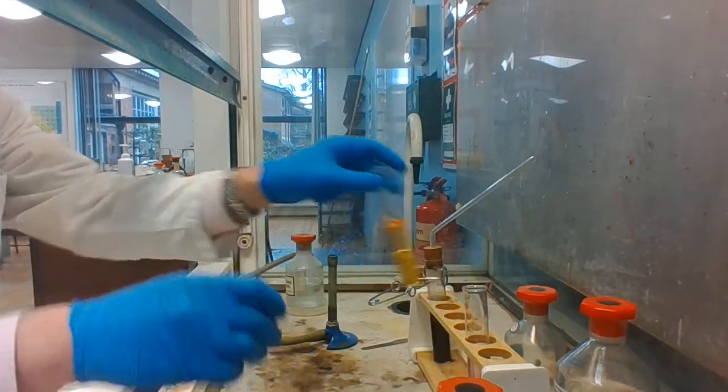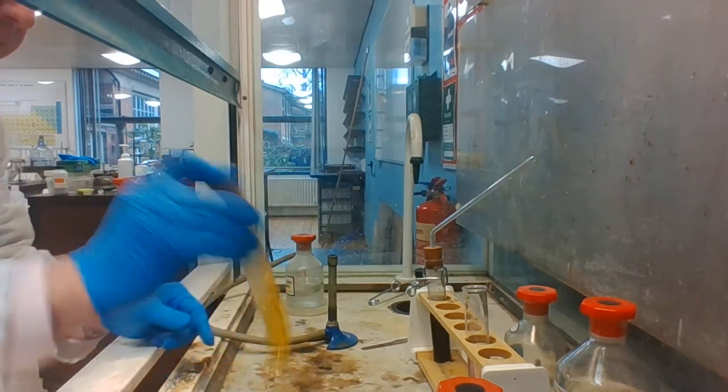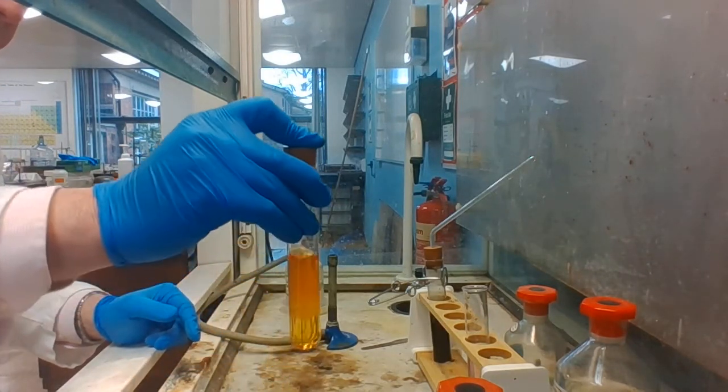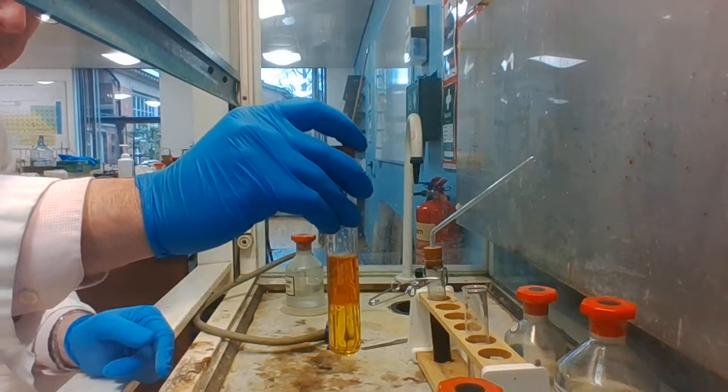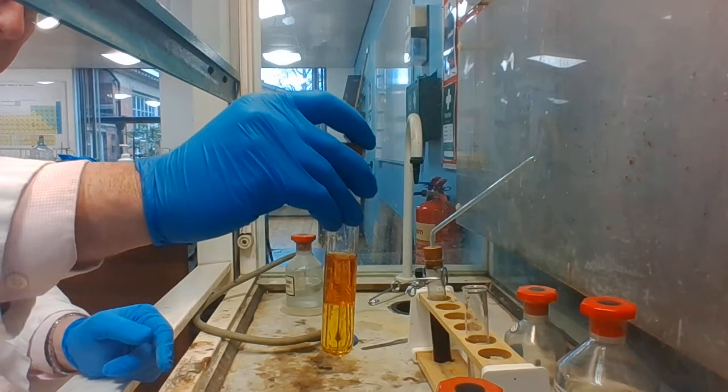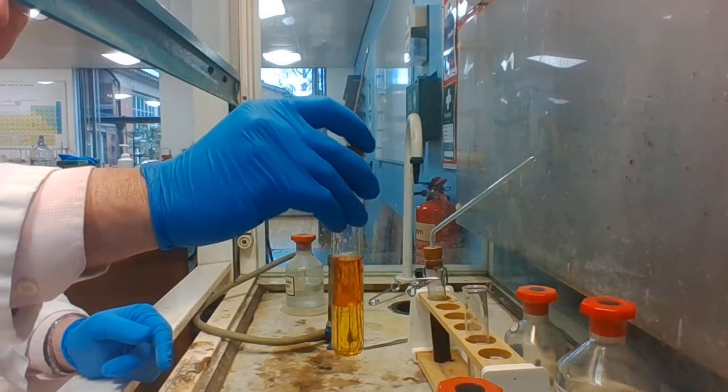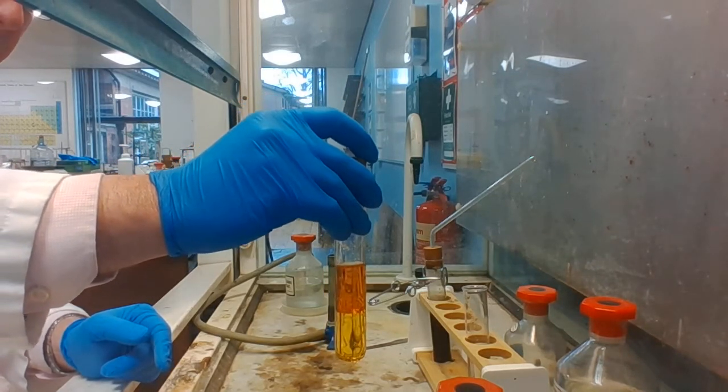And if I now shake them and we look at the color of the cyclohexane layer there on top—cyclohexane is less dense—you can see it's an orange color, and that indicates that bromine has been produced.